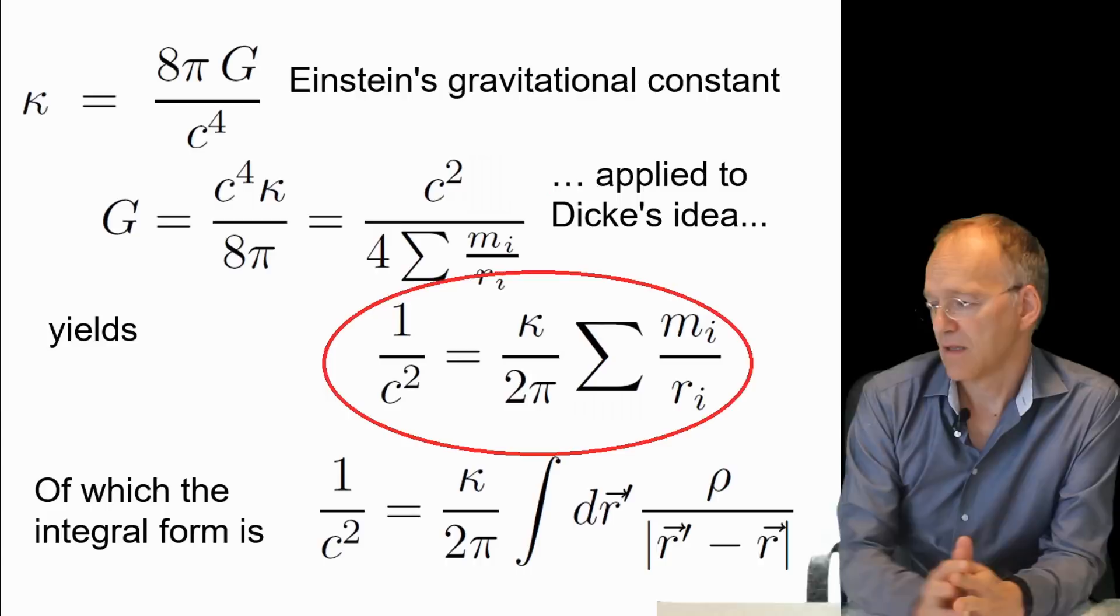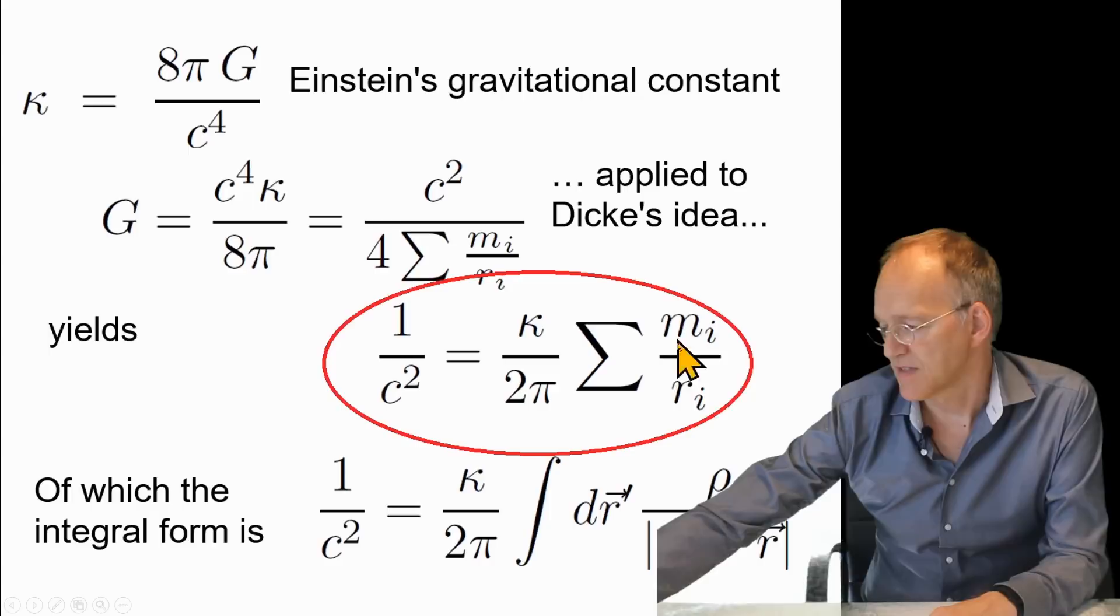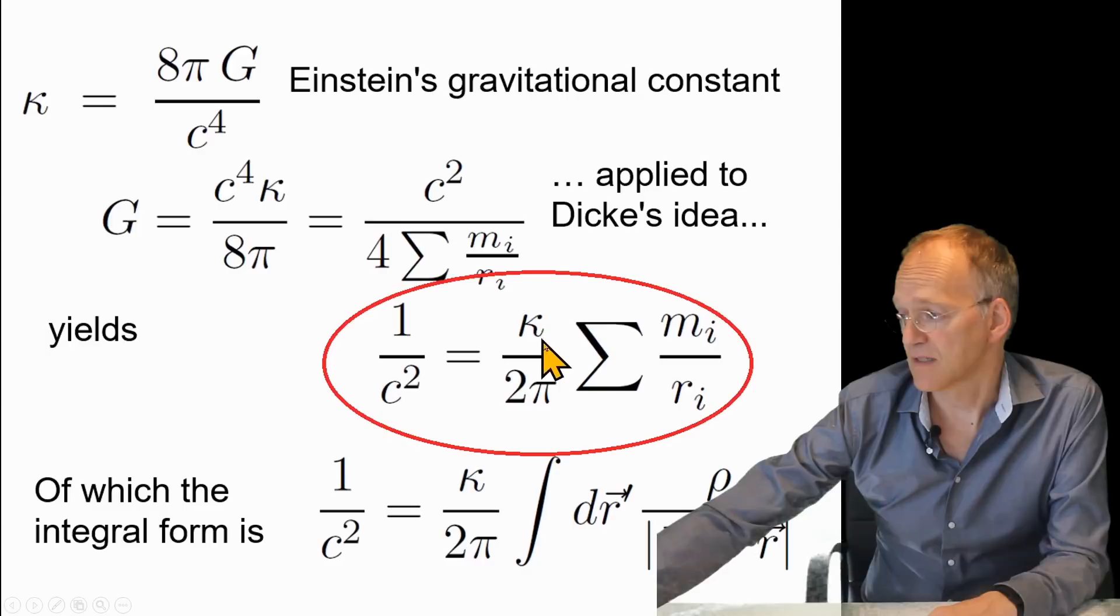We start from this important formula: the speed of light is calculated by the sum of all other masses in the universe divided by the respective distance, and this is Einstein's gravitational constant, 8πG over c to the fourth power.